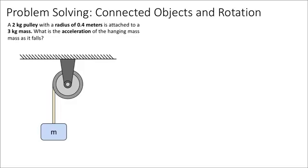Let's jump into solving an example problem. We're given a 2 kilogram mass pulley with a radius of 0.4 meters, and attached to that is a 3 kilogram mass. We're going to try and solve for the acceleration of the hanging mass as it falls.